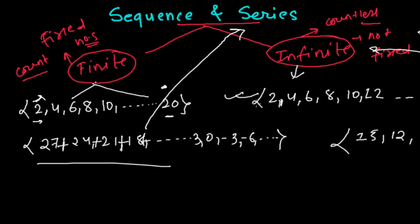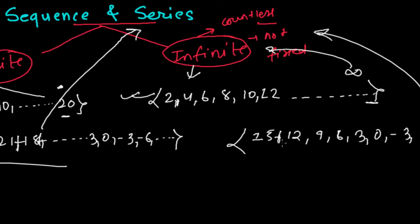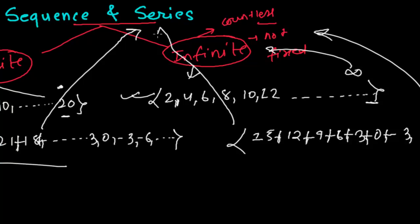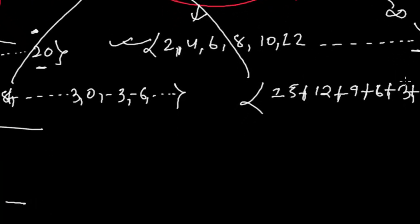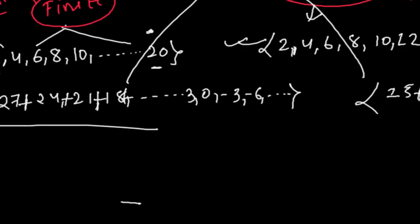If you simply replace the commas with addition symbols, it becomes a series — a finite series. We initially learned this distinction between sequence and series in the previous video.